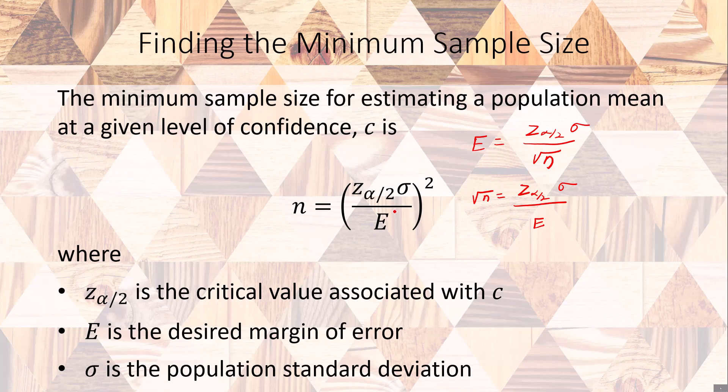To do this you need to know what your critical value is, you need to know what sigma is, and you need to know what E is. Once you've done that you're going to get a value for n. If it is a decimal like 42.00001 you need to round to the next higher integer every single time. So let's go ahead and take a look at this example here.